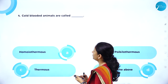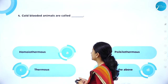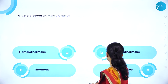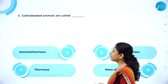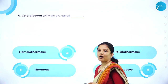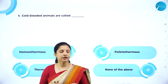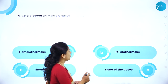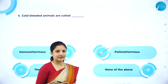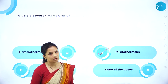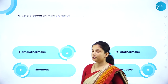MCQ: Cold-blooded animals are called — homeothermous, poikilothermous, thermous, or none of the above? Homeothermous refers to warm-blooded animals, so that option is not right. The correct term is poikilothermous, which means cold-blooded animals. So option B is the right option here.